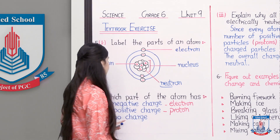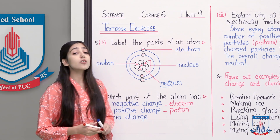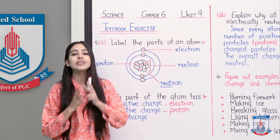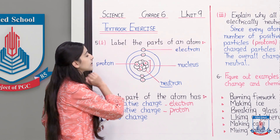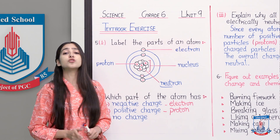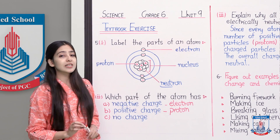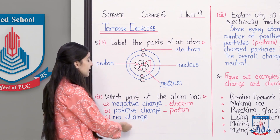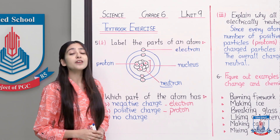Part C says: name a particle which has no charge. Which part of an atom has no charge on it? In the nucleus there were two types of particles, and one of them had no charge - it was called neutron. As I said, it is neutral which means it has no charge. So we will write C part of the answer as neutron.